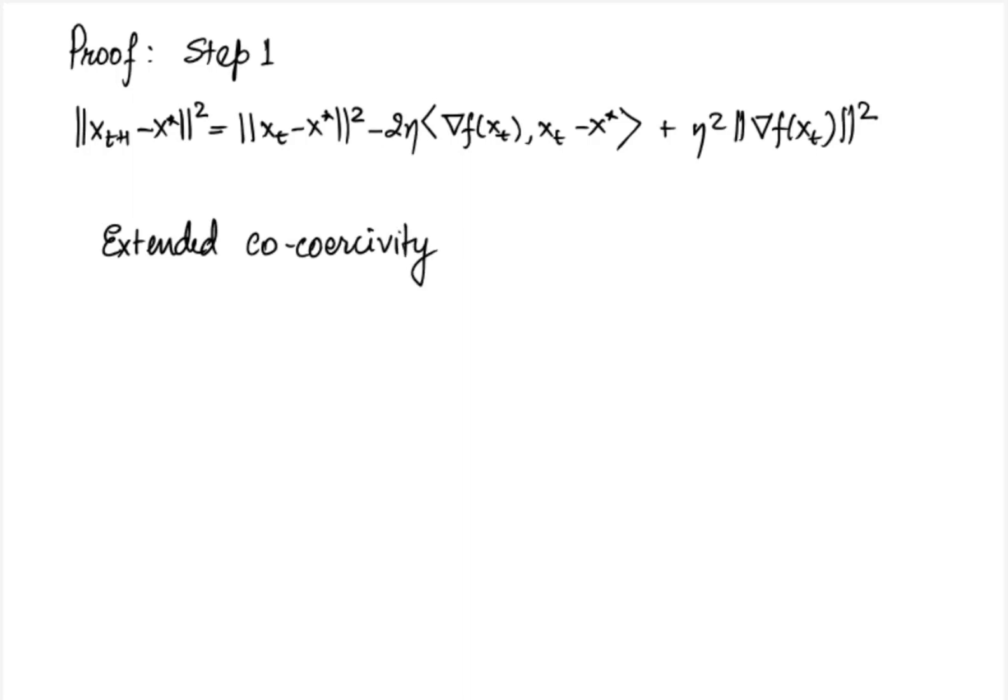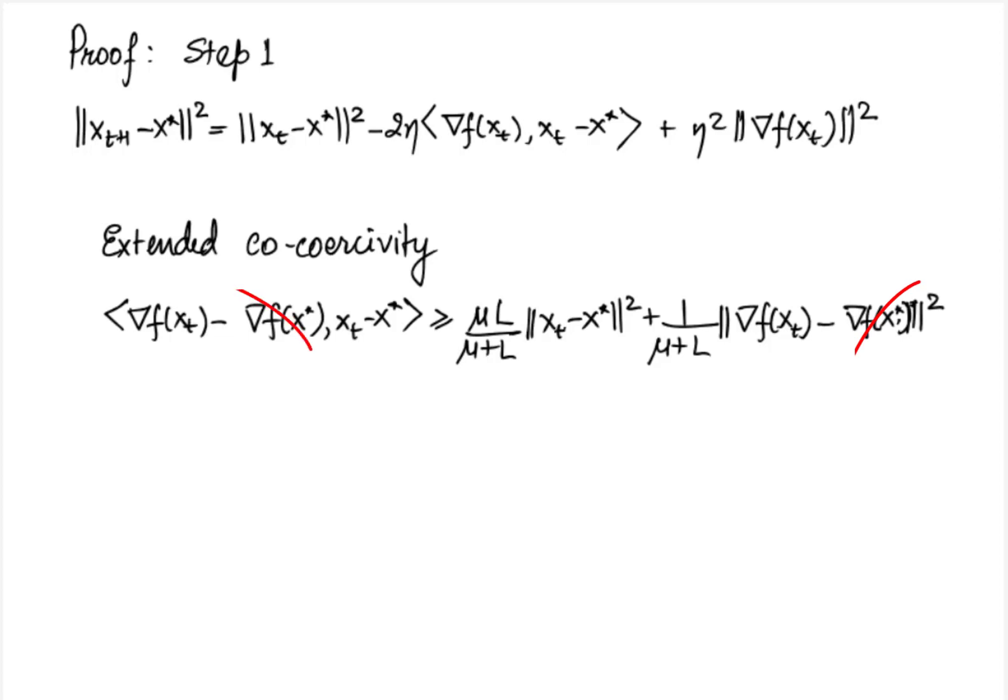Applied to x t and x star it can be written as inner product of gradient f x t minus gradient f x star comma x t minus x star greater than or equal to mu l by mu plus l norm square of x t minus x star plus 1 by mu plus l norm square of gradient f x t minus gradient f x star. Here of course remember that gradient f x star is 0. So these two terms can be removed. We can use this inequality by multiplying it with 2 eta.